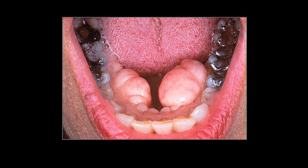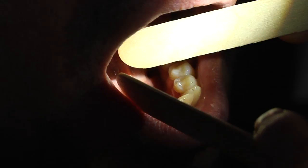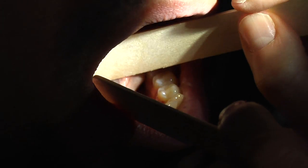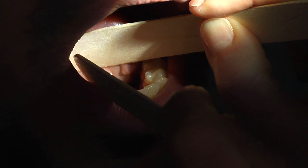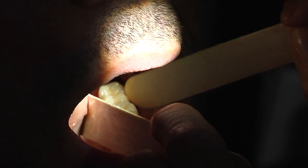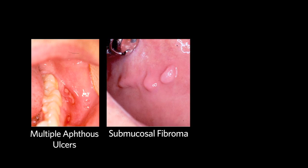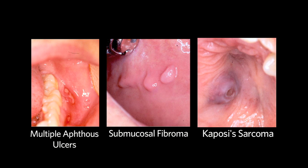A common abnormality seen in the floor of the mouth on the lingual surface of the mandible is a bony prominence known as the torus mandibularis. To complete the examination of the floor of the mouth, take the tongue blade and gently push the tongue away from the mandible, first on one side and then the other. In evaluating the oral cavity, one must make sure there are no ulcerations, masses, or growths that might suggest malignancy.